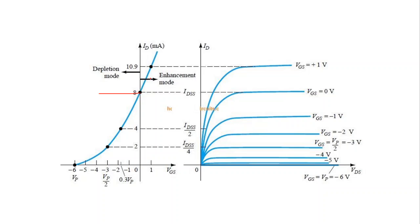That is why the transfer characteristics will not end at IDSS but will increase further beyond IDSS. When VGS is made positive, the drain current ID increases very rapidly. For example, we have an ID of 8 milliampere at VGS equal to 0 volt.